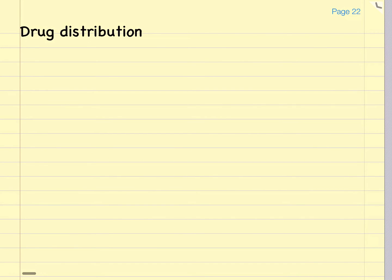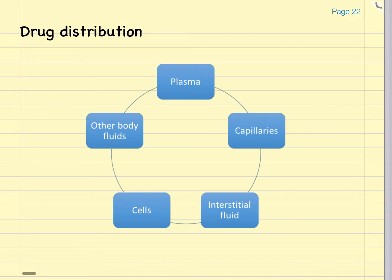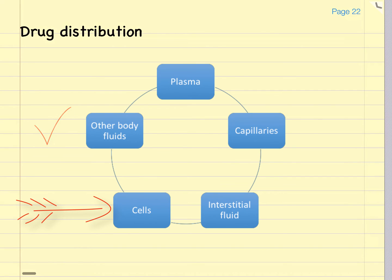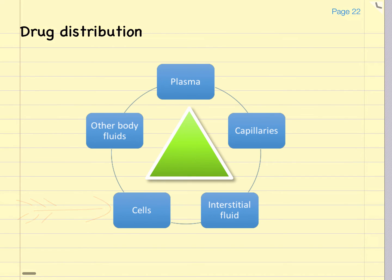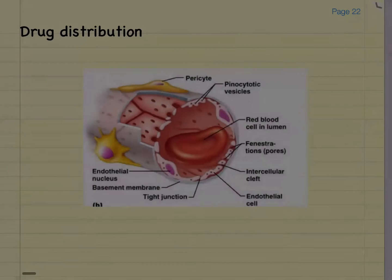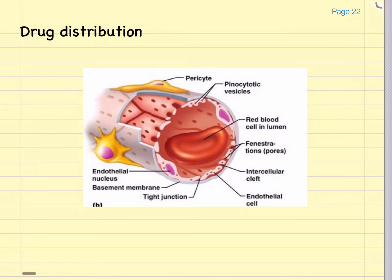Now let's look at the pharmacokinetic process called drug distribution. This is the process by which a drug is carried from the site of absorption to the site of action in a target cell. In order for this to happen, the drug has to travel through the extracellular fluid, into the capillaries via the plasma, then out of the capillaries, into the interstitial fluid, and then into the target cells. Eventually an equilibrium is reached between the cells, the interstitial fluids, and the plasma. Once a drug reaches the capillary beds, it does not have to be lipophilic in order to cross the endothelial wall — it can simply pass through small gaps between cells to travel into the tissues.